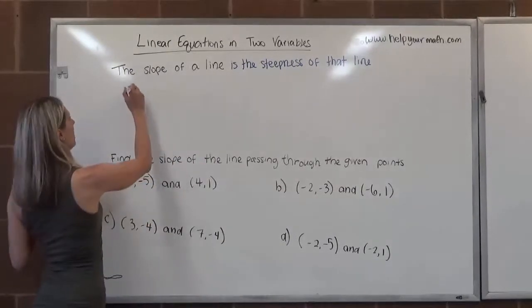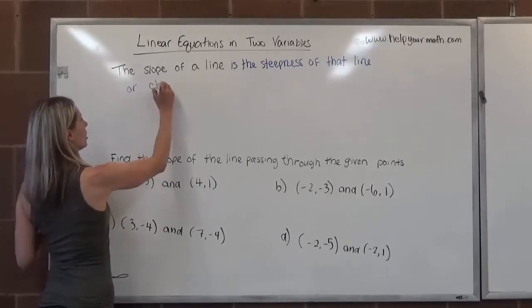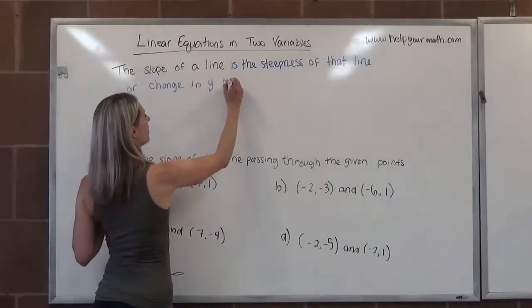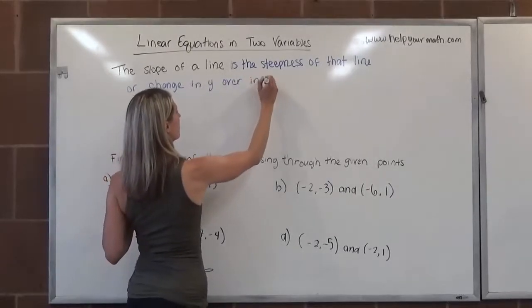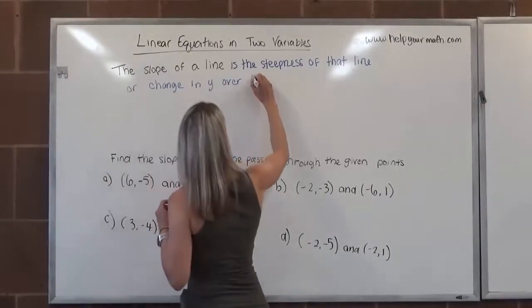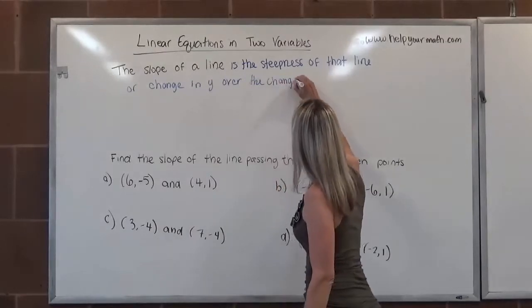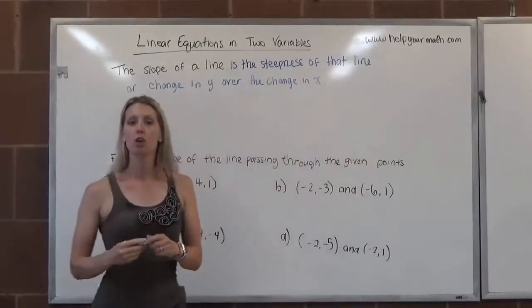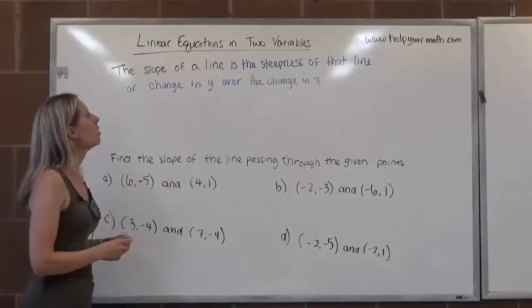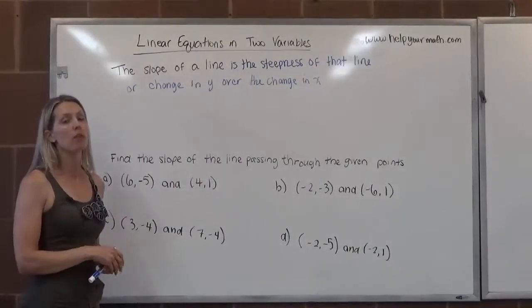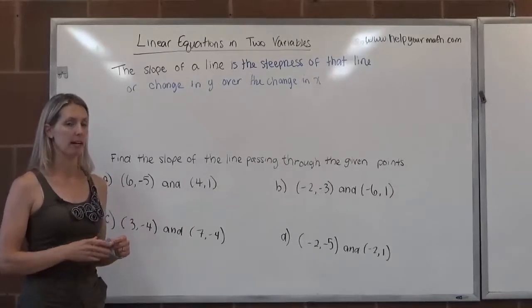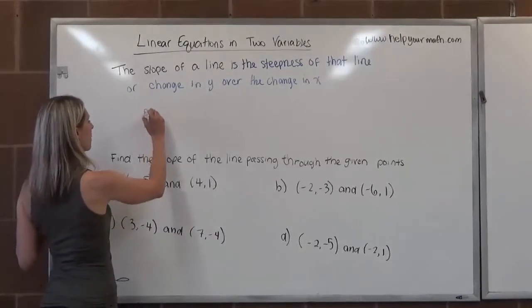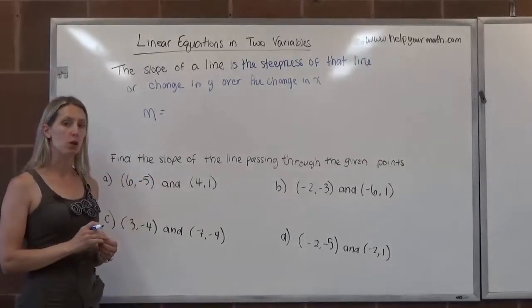So sometimes we think about it as the change in y over the change in x. And so we have a formula that we use to calculate the slope if we're given two points of a line. Also, we have a formula that we can use if we're given the graph of a line, if we're able to identify two points. In either case, we use m to represent the variable for slope.